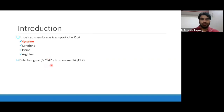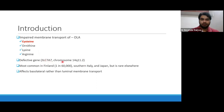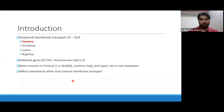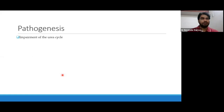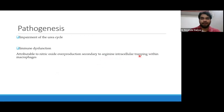Lysinuric protein intolerance is rare, but most commonly seen in Finland, southern Italy, and Japan. This protein is not present on the apical portion of PCT cells — it is present on the basolateral area in the luminal membrane transport. There are two defects: because ornithine and arginine are being lost, there is impairment of the urea cycle, meaning the patient will have difficulty handling protein load. Because of this urea cycle defect, there can be immune dysfunction, attributable to increased production of nitric oxide secondary to arginine intracellular trapping within macrophages.